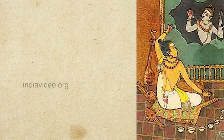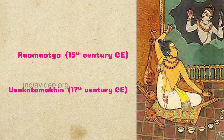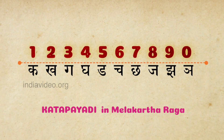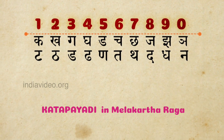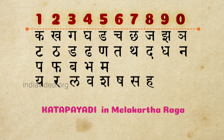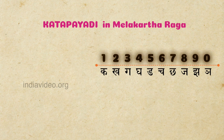First propounded in the mid-15th century CE by Ramamathya, the Mela system of arranging ragas was revised and refined over centuries. The system that is used now was expounded by Venkatamakin in the 17th century. The Melakarta system uses Kattapayadi to name the ragas. The first two syllables of the name of each raga represent the raga's position in the Melakarta sequence.